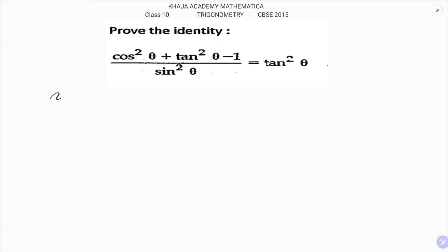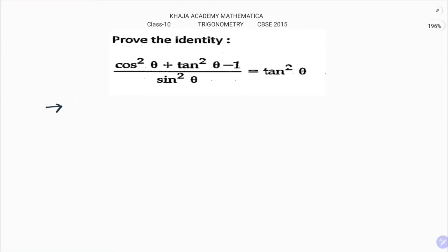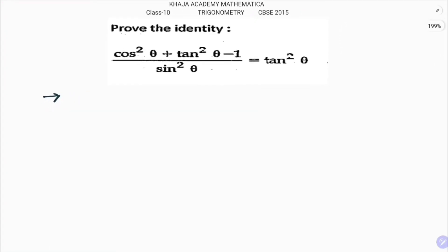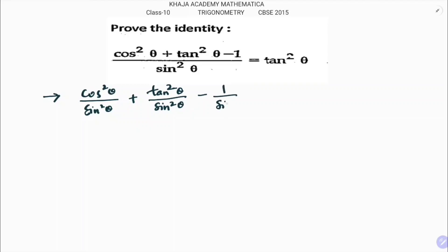In the first step, split the numerator. Write cos²θ / sin²θ + tan²θ / sin²θ - 1 / sin²θ. We know that cos²θ / sin²θ is cot²θ.